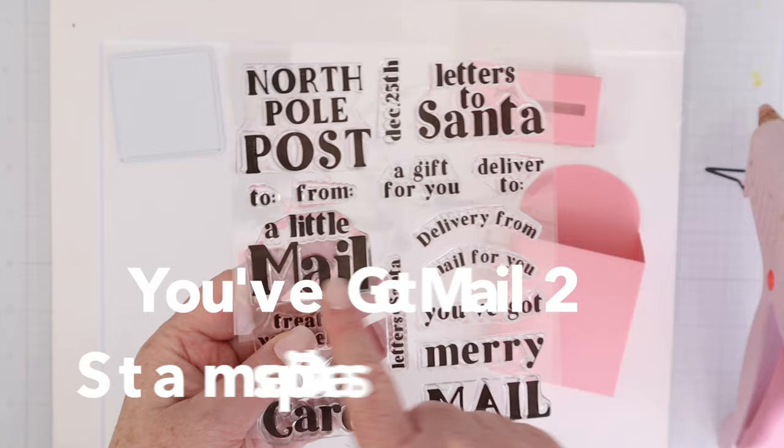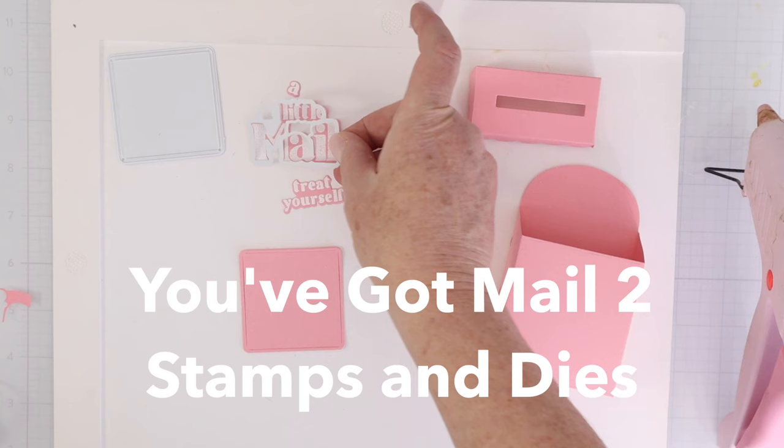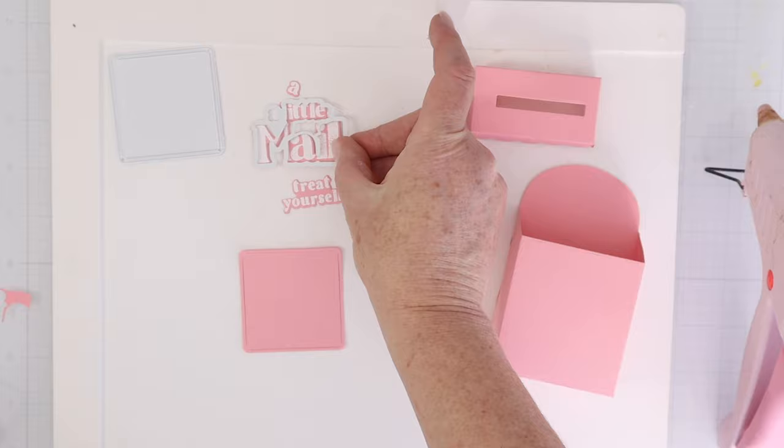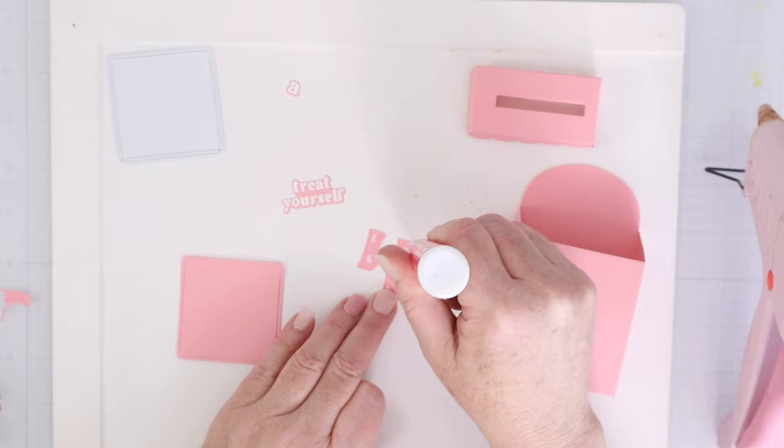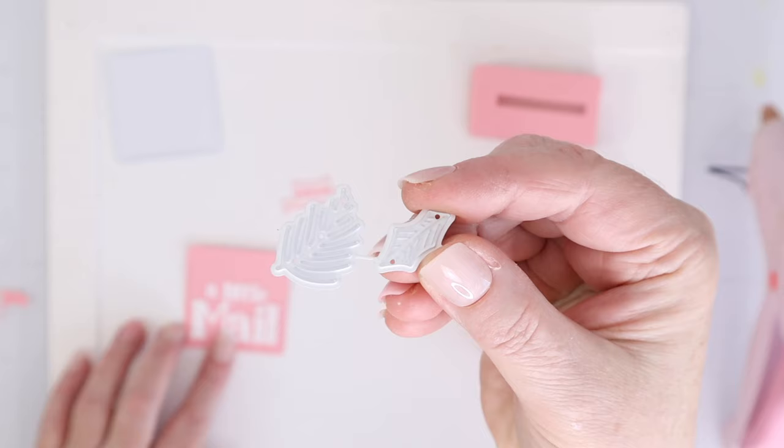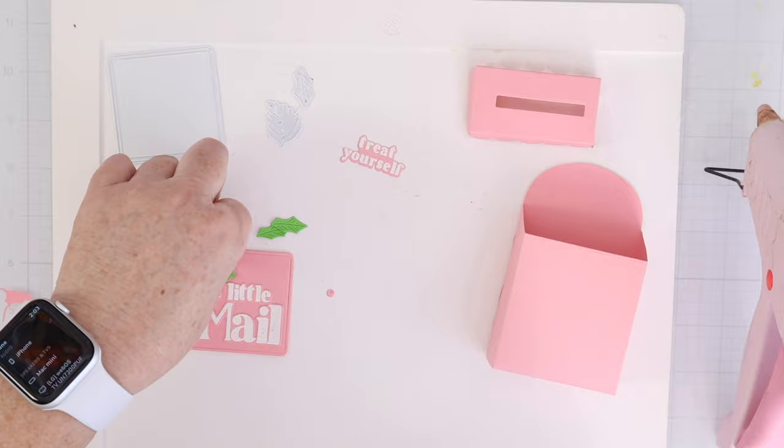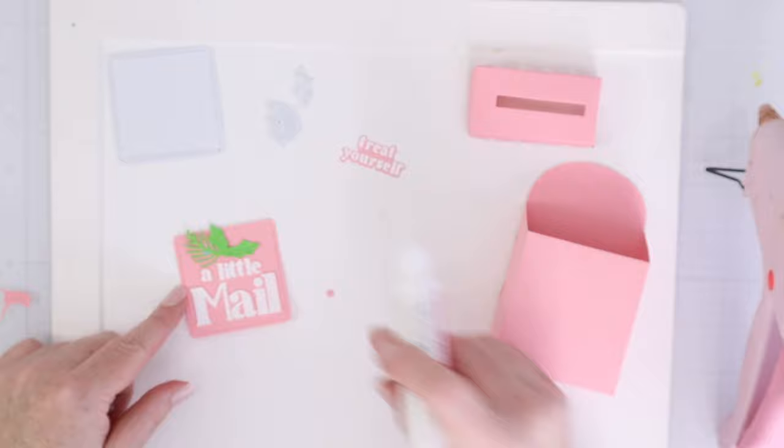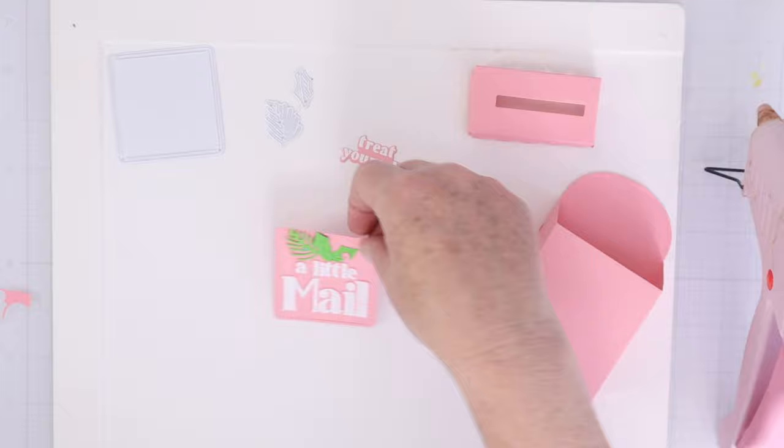This is the You've Got Mail 2 stamps and dies. I love that they have dies, so you can die cut everything out, which means you can pop it up. You can make it in different colors. I decided to heat emboss mine with white embossing powder.